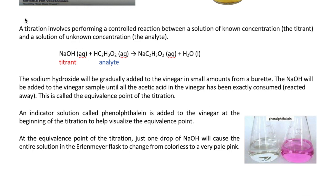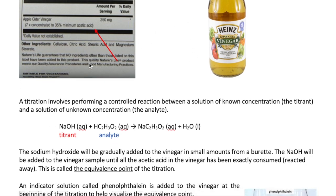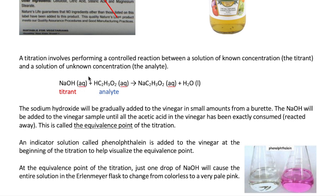Titration is a technique used in the lab when we're trying to run a reaction between two types of solutions. One is a solution with a known concentration — we call that the titrant. The other is a solution whose concentration we don't know — we call that the analyte. Here, our analyte is the acetic acid in the vinegar. Since acetic acid is an acid, we'll use a base — sodium hydroxide — to react with it. That reaction is a simple acid-base double displacement reaction producing sodium acetate and water.